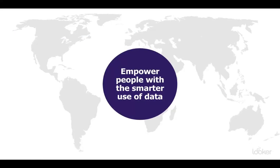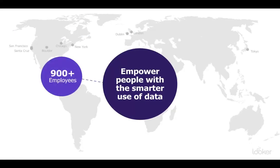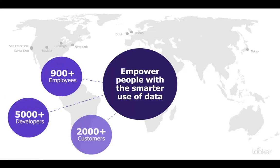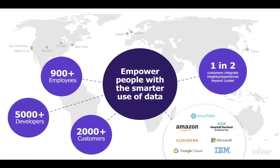Looker is a relatively small company, but today we announced the close of the deal of being acquired by Google. Some of these numbers may not be 100% accurate after our acquisition by Google yesterday, but we have about 900 — actually closer to 1,000 — employees now, 5,000 developers globally, and about 1.2 million licensed users around the globe. So we're big, we're growing, and we have a lot of momentum in making sure that data gets to the people who need it to make better business decisions.